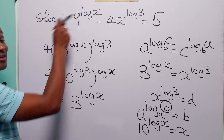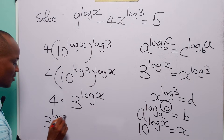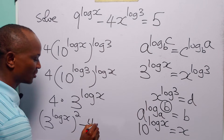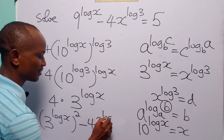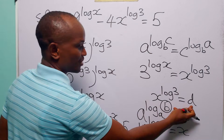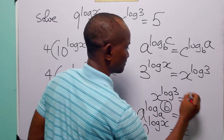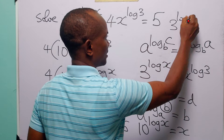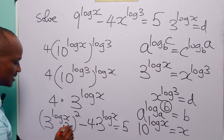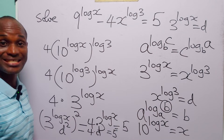Now I have written the second term to have the same exponent as the first term. The first term is 3 to the power log x squared, and the second term is minus 4 times 3 to the power log x, equal to 5. Once more, let 3 to the power log x equal d. This equation becomes d squared minus 4 times d equals 5 — exactly the same equation as in the first case.